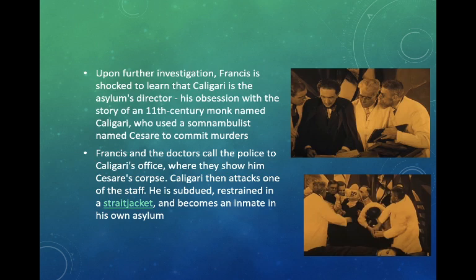Francis enters the madhouse, sure he will find the truth. Upon further investigation, he is shocked to learn that Caligari is the asylum's director. Going through his diary, Francis discovers that Dr. Caligari had an obsession with the story of an 11th-century monk named Caligari, who used a somnambulist named Césaire to commit murders. Francis and the colleagues call the police to Caligari's office, where they show him Césaire's corpse. Caligari attacks a staff member, is subdued, restrained in a straitjacket, and becomes an inmate in his own asylum.